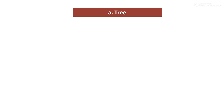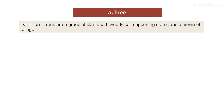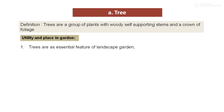First of all, the tree. What is meant by the tree? Trees are a group of plants with a woody self-supporting stem and crown of foliage. Trees are an essential feature of landscape gardening. In any garden, whether it is small or large, the tree is an essential living component.